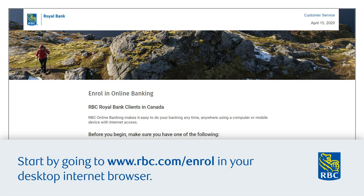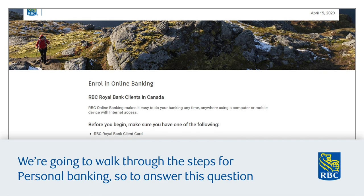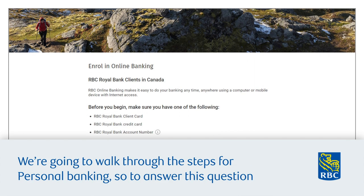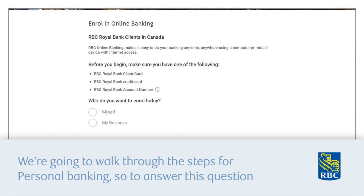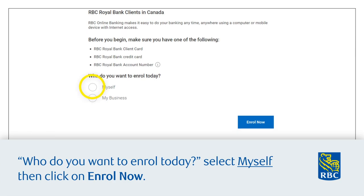Start by going to www.rbc.com/enroll in your desktop internet browser. We're going to walk through the steps for personal banking. To answer the question 'Who do you want to enroll today?' select 'Myself', then click on 'Enroll Now'.